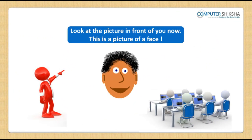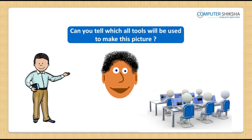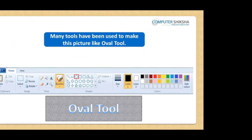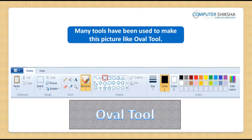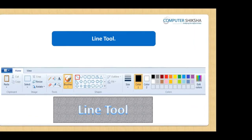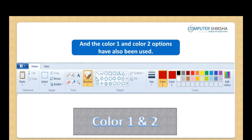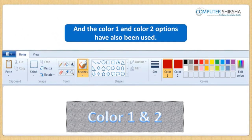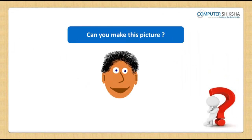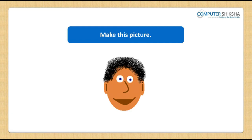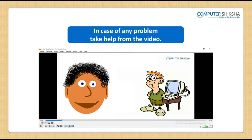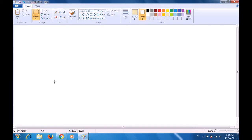Look at the picture in front of you now. This is a picture of a face. Can you tell which all tools will be used to make this picture? Many tools have been used to make this picture like the oval tool, curve tool, line tool, airbrush tool, and the color 1 and color 2 options have also been used. Can you make this picture? Make this picture — in case of any problem, take help from the video. We will watch this video carefully and learn how we can make use of various tools including the curve tool and the oval tool to make this picture of a face.